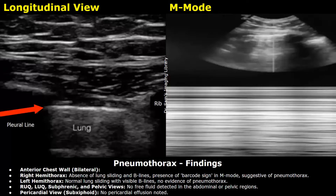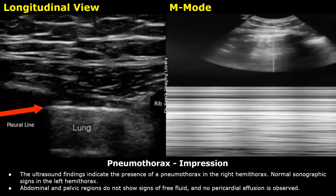Impression: The ultrasound findings indicate the presence of a pneumothorax in the right hemithorax. Normal sonographic signs in the left hemithorax. Abdominal and pelvic regions do not show signs of free fluid, and no pericardial effusion is observed.